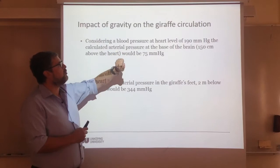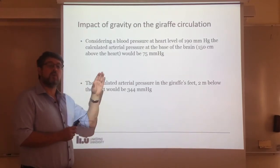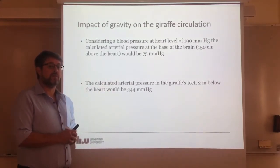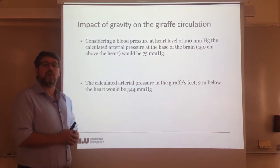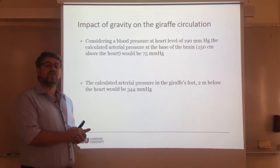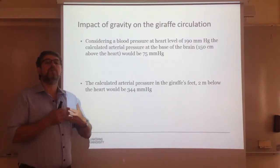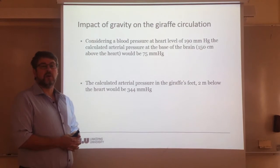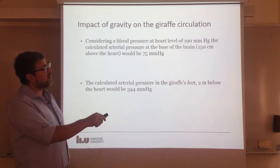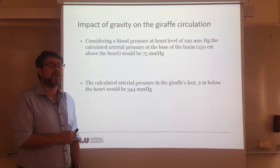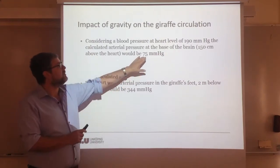Imagine that blood pressure at the level of the heart is 190 millimeters of mercury — this is a high blood pressure, but close to the blood pressure in the giraffe. This is what would correspond in a human to the normal blood pressure of 120 over 80, systolic versus diastolic. Take 190 and calculate what the corresponding pressure would be at the base of the brain, which is 150 centimeters above the heart. The corresponding pressure would be 75 millimeters of mercury.